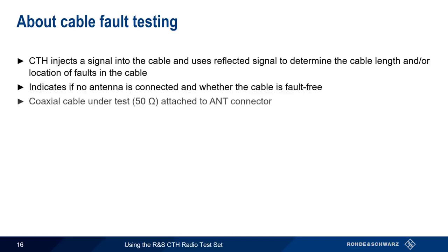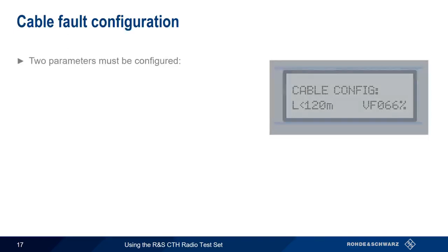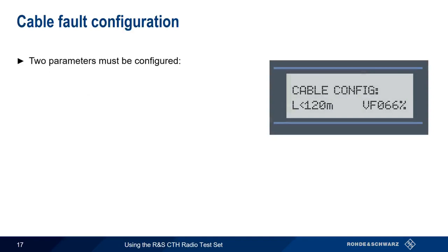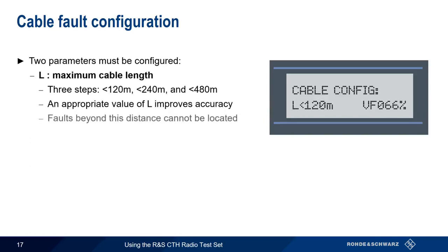To perform cable tests, the coaxial cable is connected to the CTH's antenna connector. In order to make cable fault measurements, two parameters must be configured. The first is L, the maximum length of the cable, which can be given in three steps: up to 120 meters, up to 240 meters, or up to 480 meters. Choosing the appropriate value for L improves measurement accuracy. Note also that faults beyond this configured distance cannot be located.